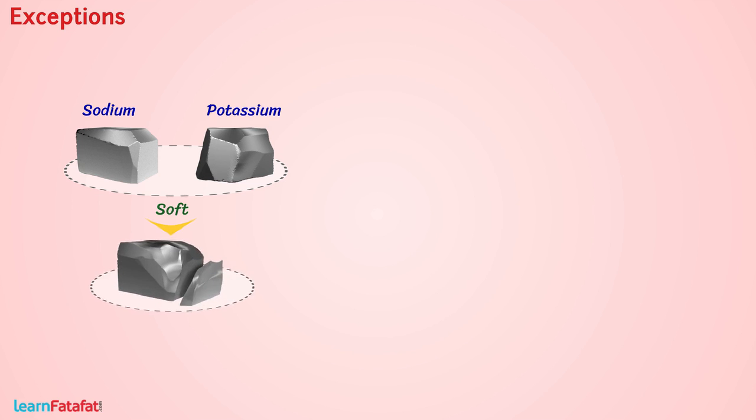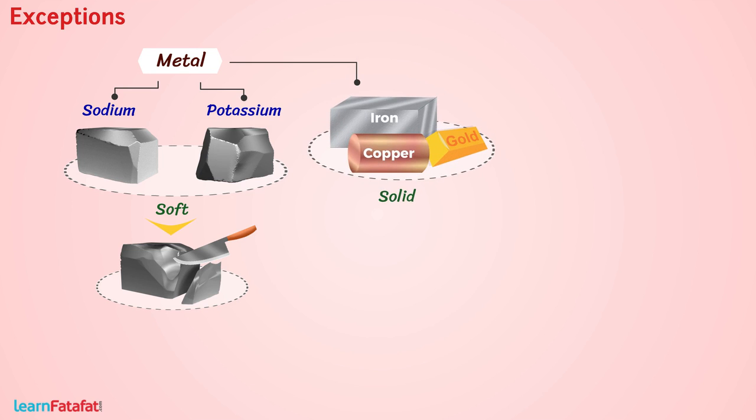Exceptions: Sodium and potassium are soft and can be easily cut to form a plain surface with a knife. However, these are metals. Similarly, all metals are solid except mercury, which exists in liquid form.